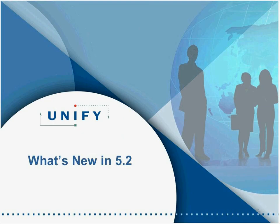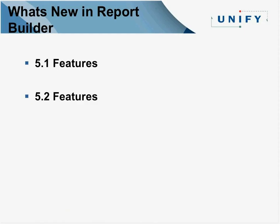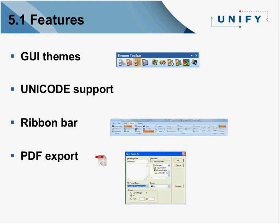Now let's go over what's been added in Report Builder 5.1 and 5.2. In 5.1 there was a modernization of Team Developer and Report Builder — we added different themes for the development environment, giving it a newer look and feel. Full Unicode support means multi-byte characters are now fully allowed and supported in your reports. The ribbon bar is now how you navigate through and work with reports, similar to Office 2007. Probably the biggest addition is that people wanted to export reports as PDFs — that's now natively available in Report Builder 5.1 and 5.2.